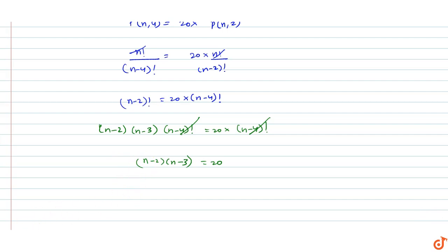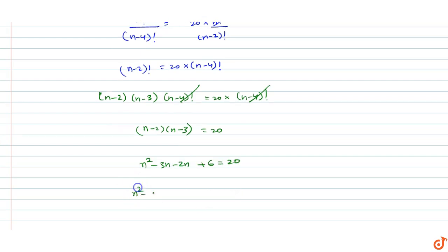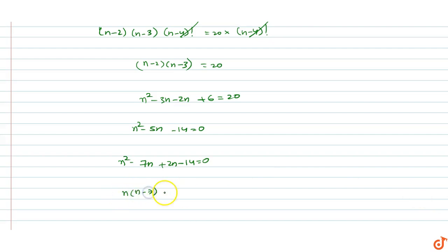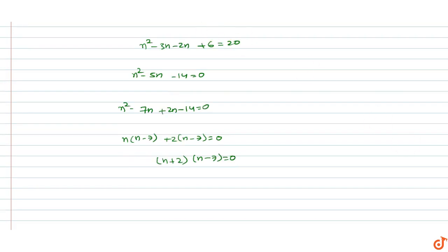Expanding: n squared minus 3n minus 2n plus 6 equals 20, which gives n squared minus 5n minus 14 equals 0. Factoring: n squared minus 7n plus 2n minus 14 equals 0, so n(n minus 7) plus 2(n minus 7) equals 0, giving (n plus 2)(n minus 7) equals 0.